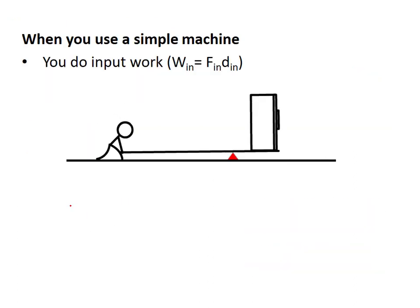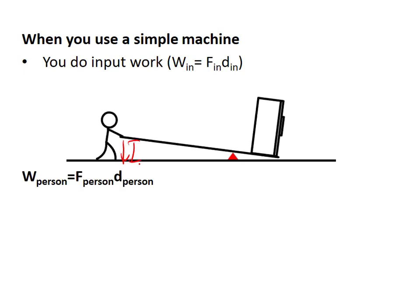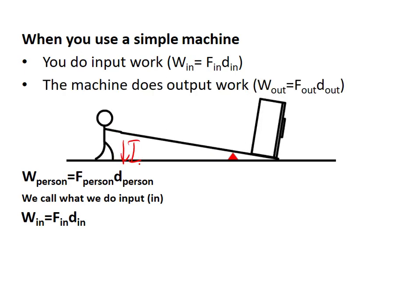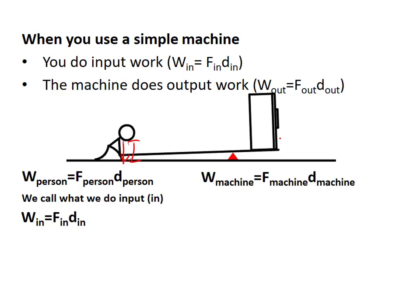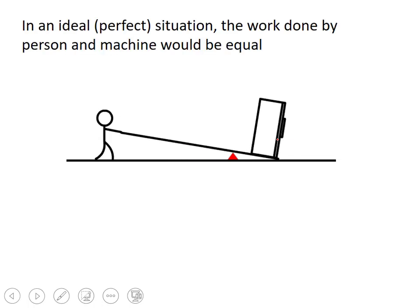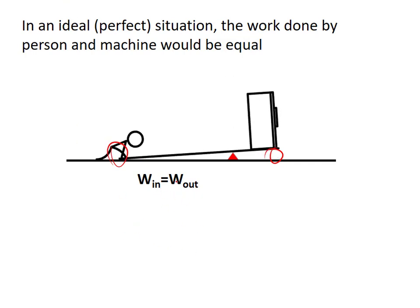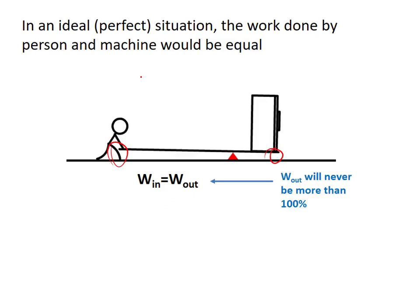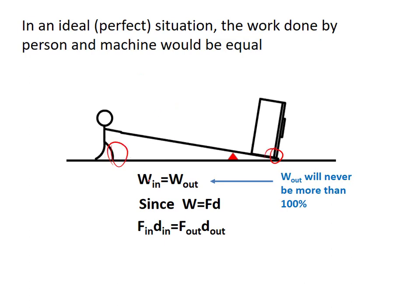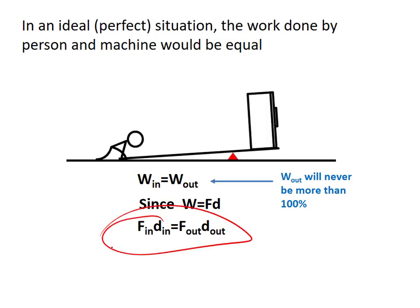When you use a simple machine, you apply a force in over a distance in — that's your input. The machine then does work as a result, lifting the weight of the object over an output distance. In an ideal, perfect situation, all the work this person does goes into the work the machine does. But in reality, heat is lost — no machine is 100% efficient. In an ideal situation: force_in × distance_in = force_out × distance_out.